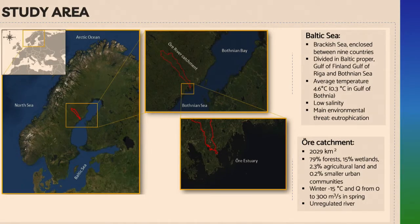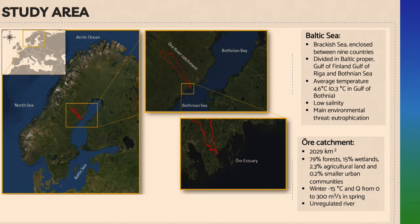These Case 2 waters are exactly the waters of the Baltic Sea. The Baltic Sea is a brackish sea enclosed between nine different countries, with low salinity due to the large amount of freshwater inputs it receives and the little water exchange with the North Sea. Another part of my study area is the Ore catchment, a relatively big catchment of 2,000 square kilometers. Its particularity is that it's natural — 79% is covered by forest and only 0.2% by urban areas. In addition, it is a non-regulated river, meaning there are no anthropogenic modifications on the river itself, which is why I chose this catchment to understand how a natural river influences the Baltic Sea.